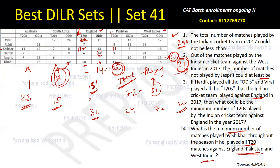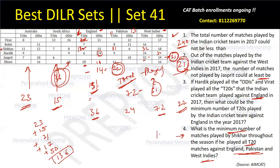Summing all Shikhar's minimum matches: 23 + 15 + 18 + 13 = let me compute — 31 + 17 = 48... totaling across all formats and opponents — 136. The answer to question four is 136.